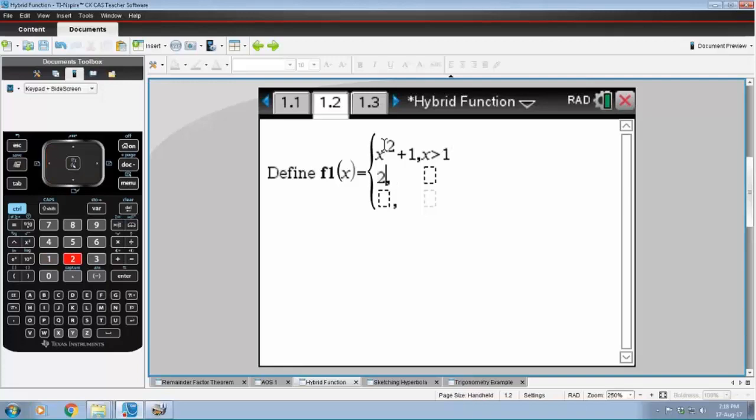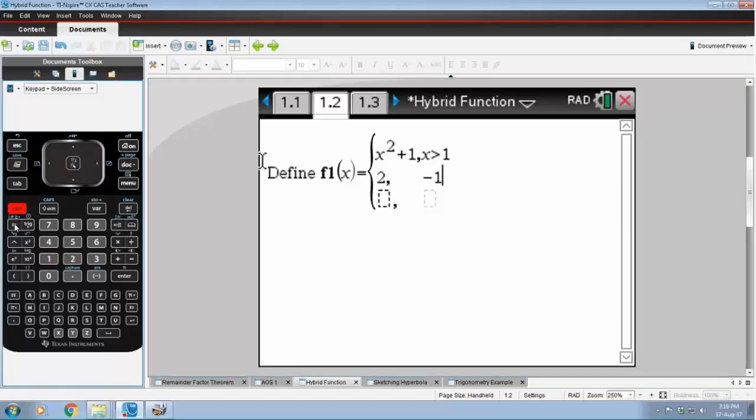Move the cursor into this piece and then press the right arrow. In here I'm going to type in minus one is less than or equal to. So control equals will give me the less than or equal to. X and control tab again.